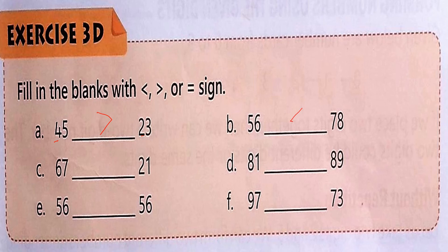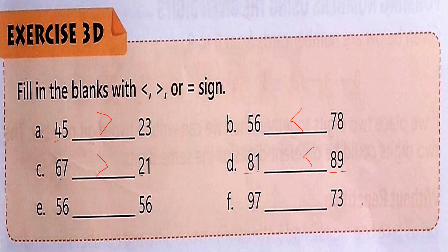Next: tens digits are 6 and 2, so 6 is bigger. Then: both tens digits are 8, so we check the ones place — this is 1 and this is 9, so 9 is bigger. Finally, when both sides are completely equal, none is bigger — we use the equal symbol.